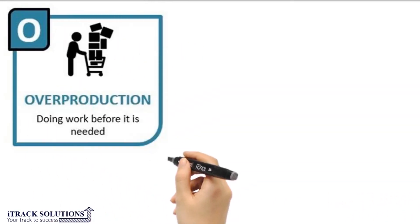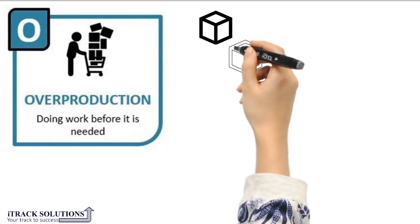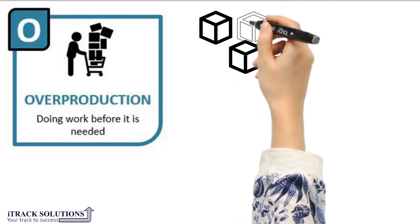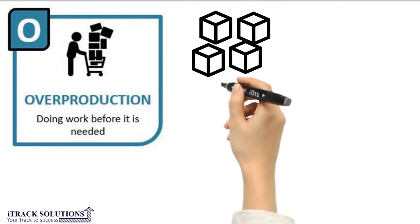Over-production waste can happen when parts, assemblies, or products are produced which are not needed, but also when items are produced before they are needed.